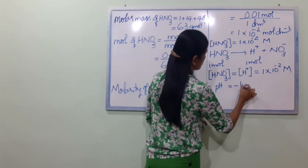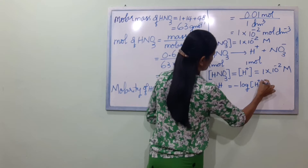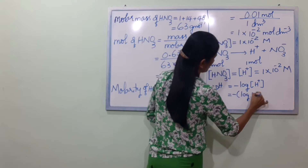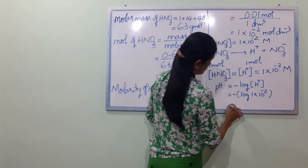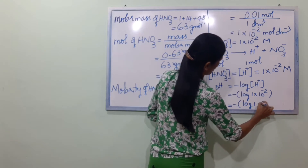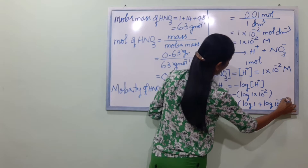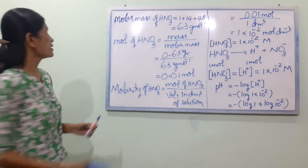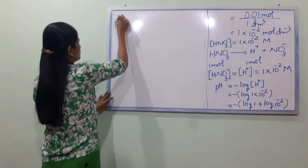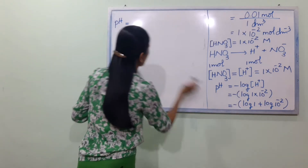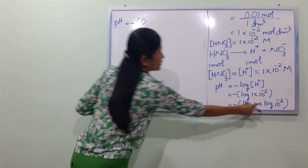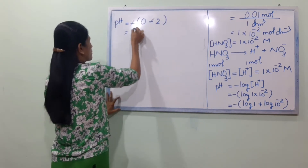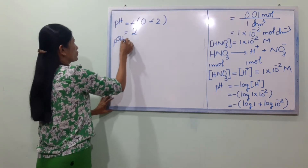pH is equal to minus log of H plus ion concentration. pH equals minus log of 1 into 10 power minus 2. Log of 1 is zero, minus two. So pH equals minus of minus 2, which equals 2.